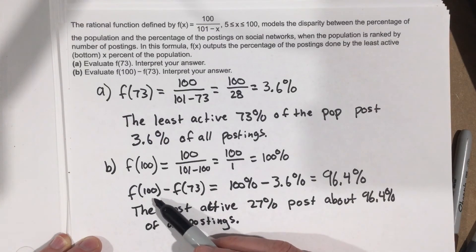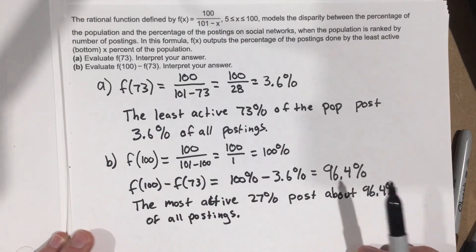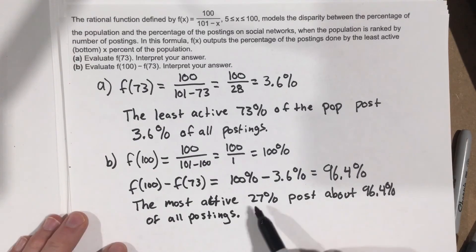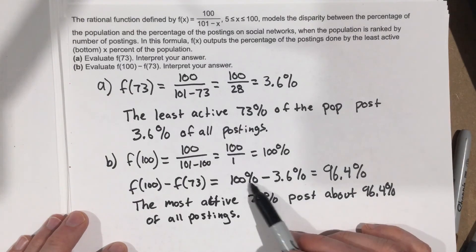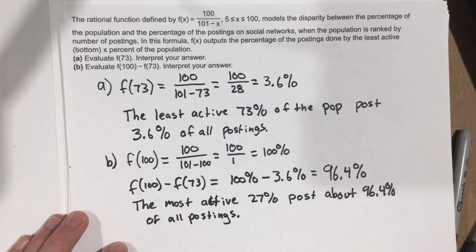When we subtract those we're actually getting the 27% that's the most active, which is what I write right here, that the most active 27% post about 96.4% of all postings. Hope that makes sense.